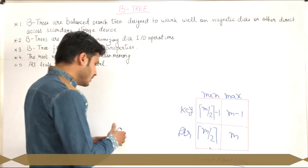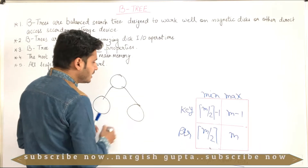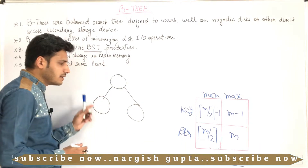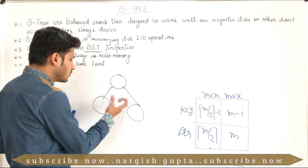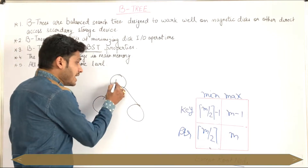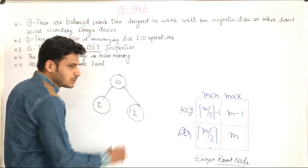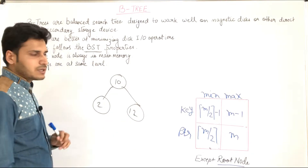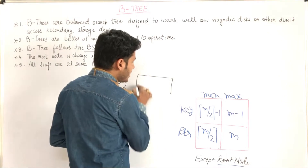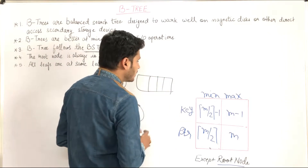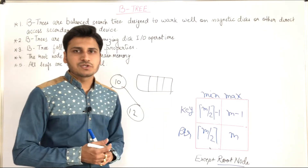In B-tree, when I talk about AVL tree, in AVL tree there is a binary tree. Binary tree means at most two children — either 0, 1, or 2. So in one node, we store one data element. But in B-tree, we store M number of information.